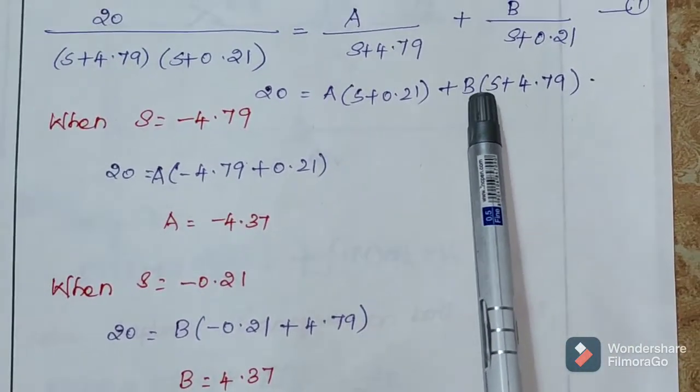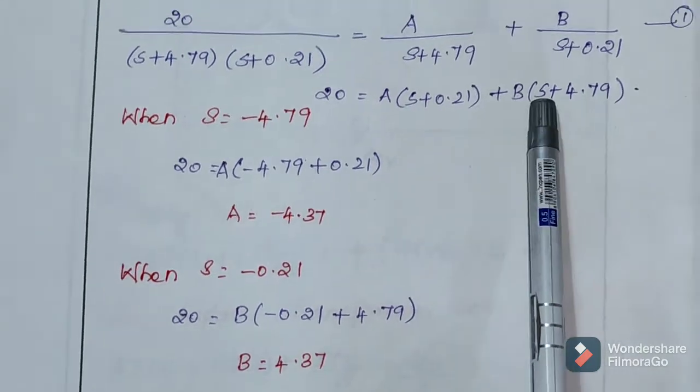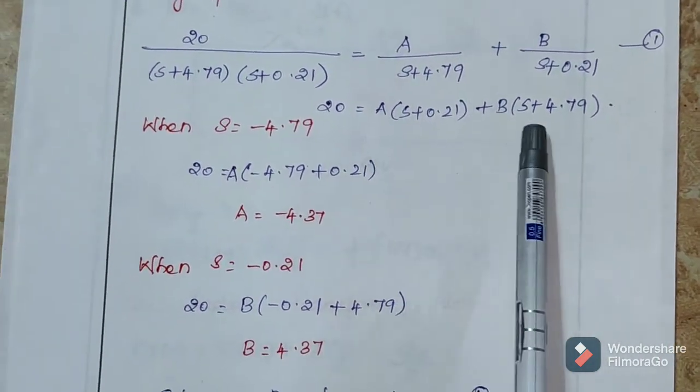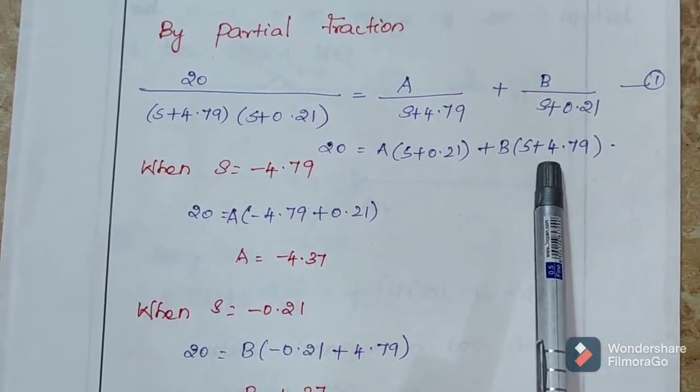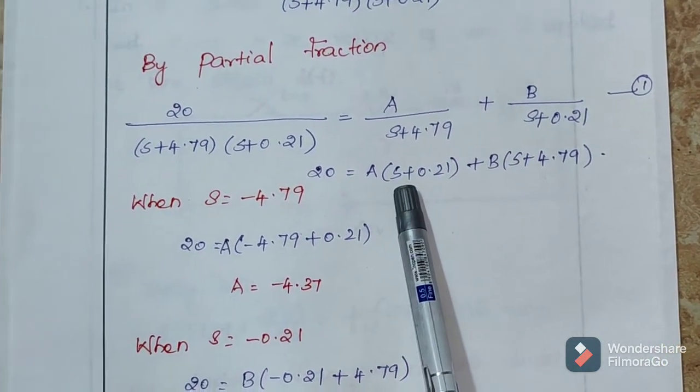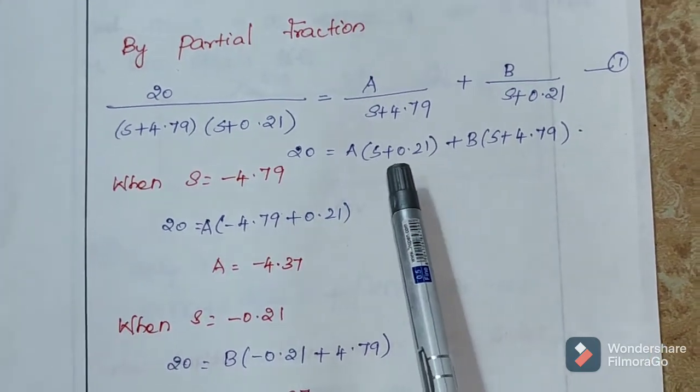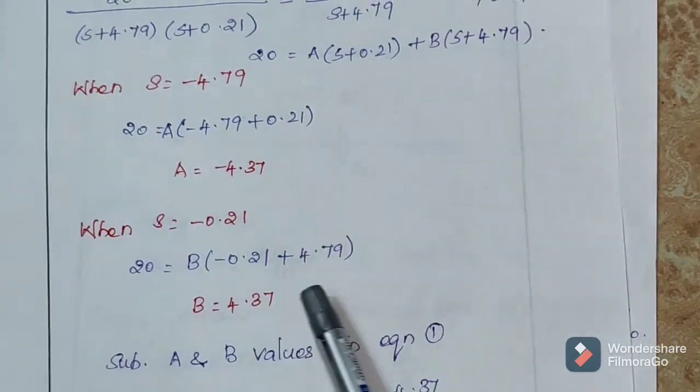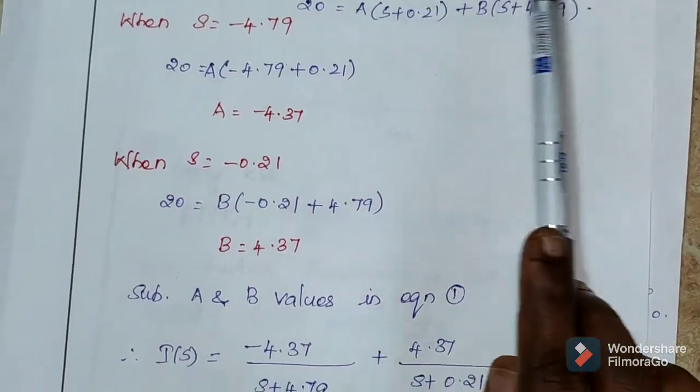Next our aim is to find the value of A and B. How will you find the value of A and B? To find A value, substitute s is equal to minus 4.79 and to find B value, substitute s is equal to minus 0.21. So, A and B values are obtained. A and B values are substituted in equation number 1.